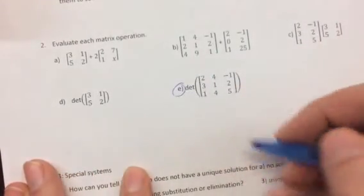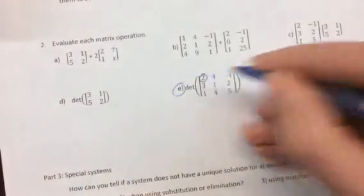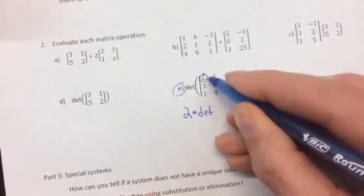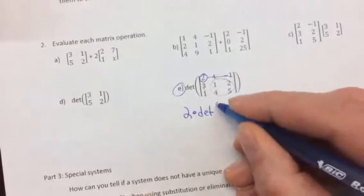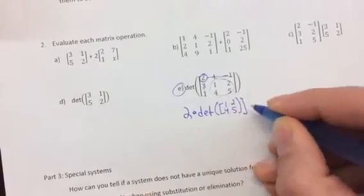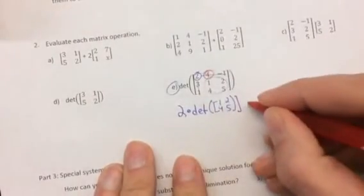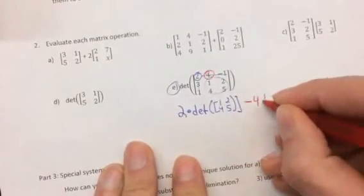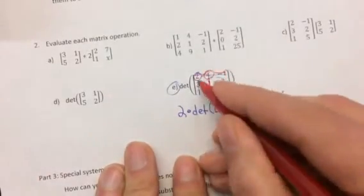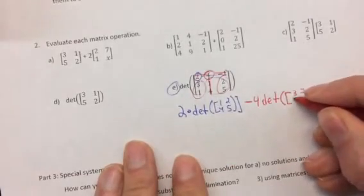When you're using determinants, the way we're going to do it is we take the first number in the row. It's going to be two times the determinant of the left over matrix which is this. So it's the determinant of 1, 2, 4, 5. The next number in the row is going to be minus, so it's always it goes positive negative positive negative, so it's minus four times the determinant of the left over matrix. We're going to cross out that row in that column, so what's left over is here. So it's the determinant of 3, 2, 1, 5.